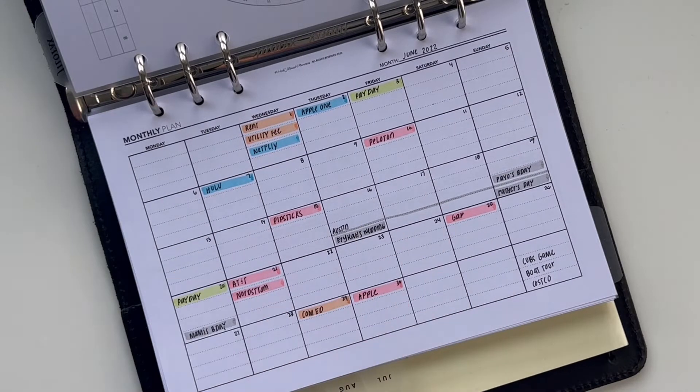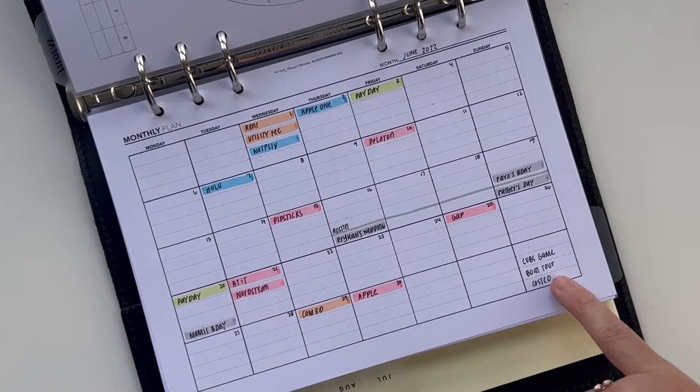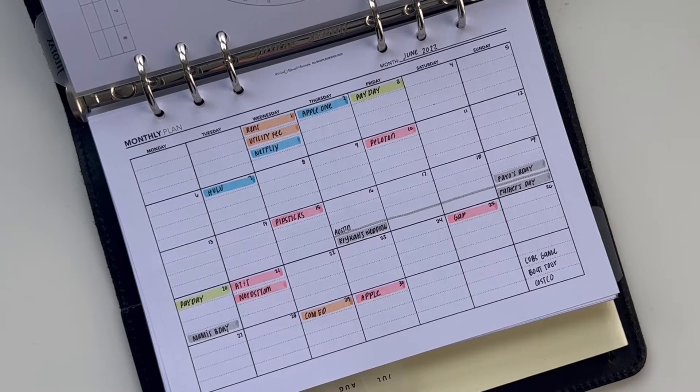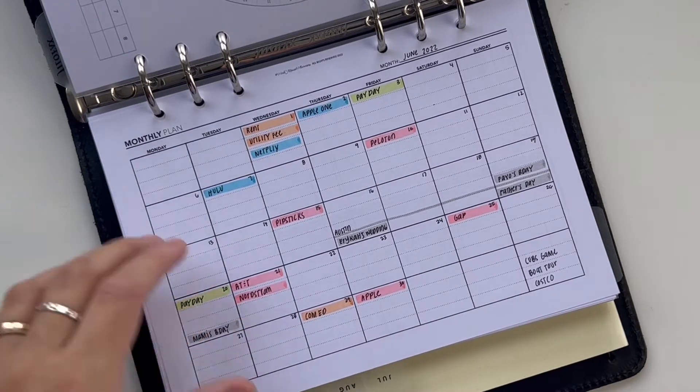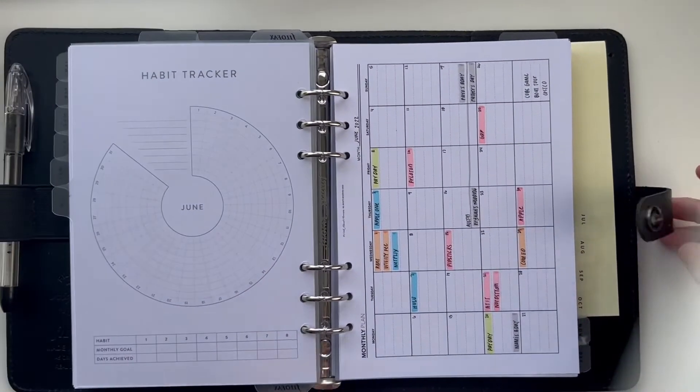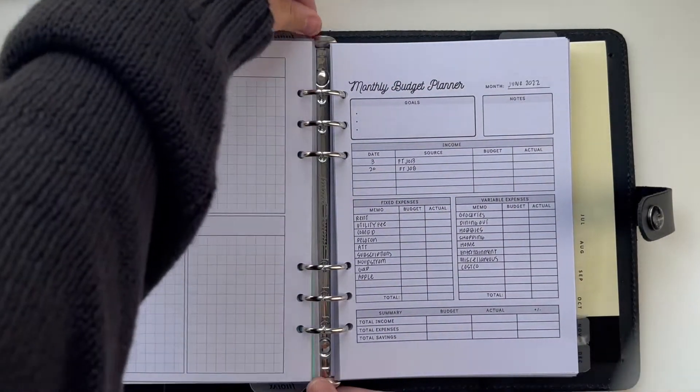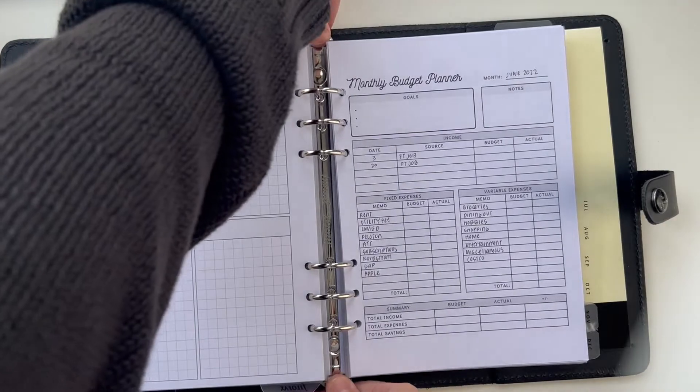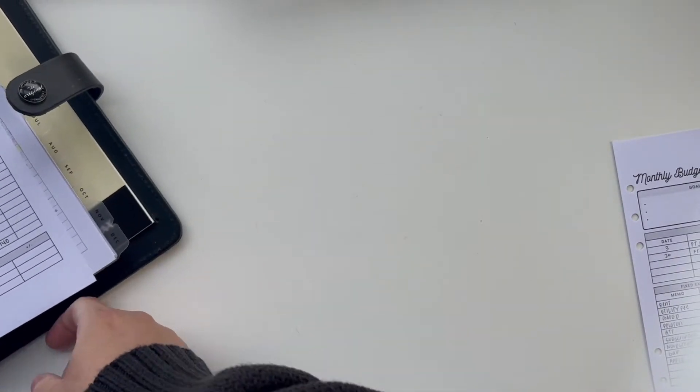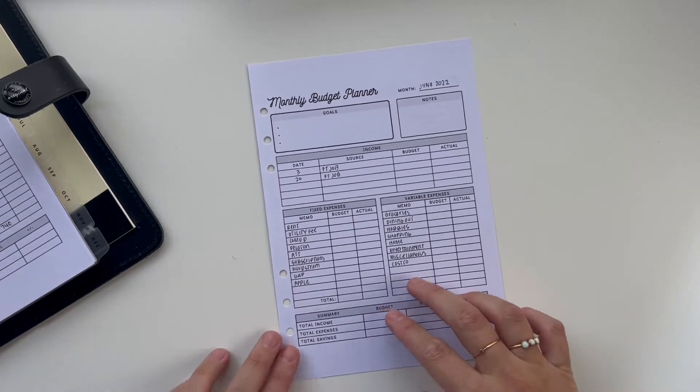If you watch my debt confession video it goes over all the amounts and what I spent the money on. This is just when the minimums are due. The gray indicates events that I have going on during the month that may require money. And then on the side over here I made a note of some other events that don't necessarily have a date but I do have to make sure to consider in my budget. I'm going to go ahead and take it out of my binder so it's a little easier to write and I can zoom in a little more.